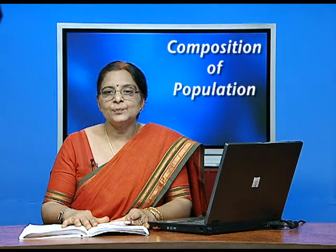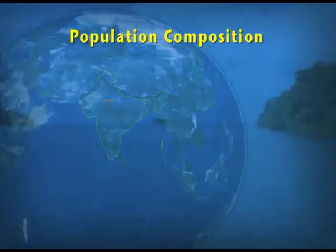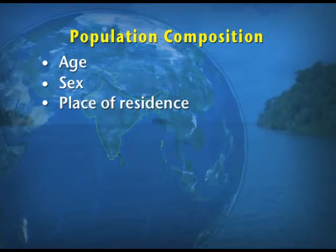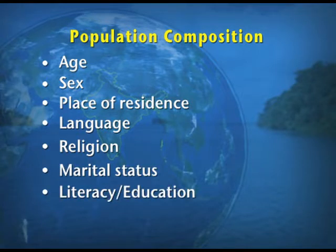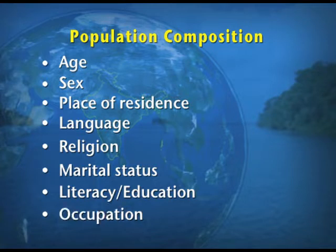What are these attributes? Under these, we include the age, sex, place of residence, language, religion, marital status, literacy or education, and the occupation.